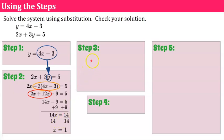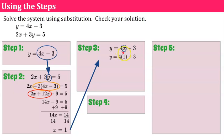Now we're ready for step three. We go back to the equation from step one: y equals 4x minus 3. We know x equals 1 from step two, so we replace x with 1. That gives us 4 times 1 minus 3, which is 4 minus 3, so y equals 1. Step four: write the answer as an ordered pair — x is 1, y is 1, so the solution is (1, 1).